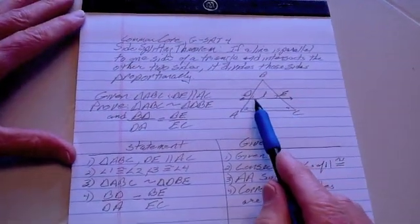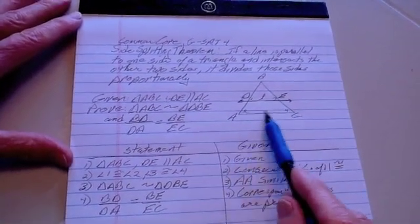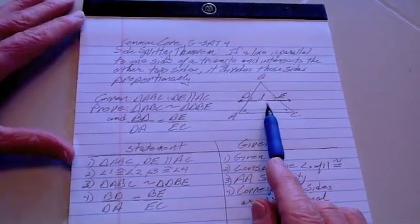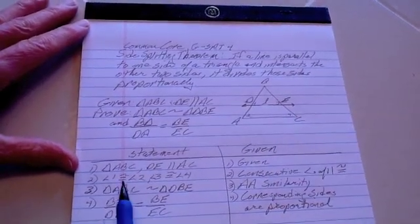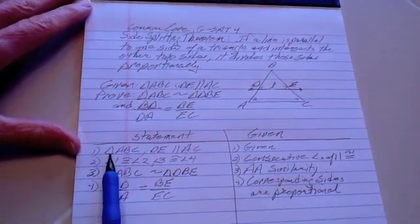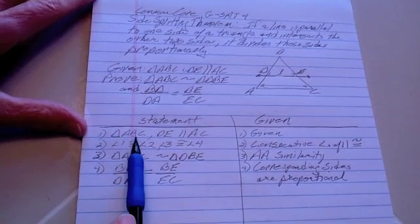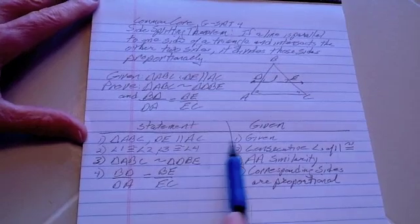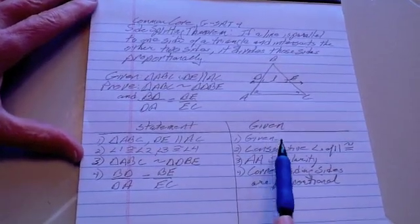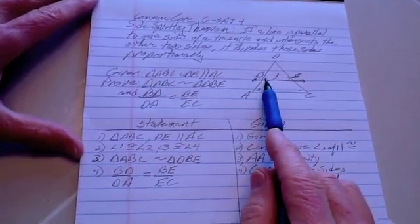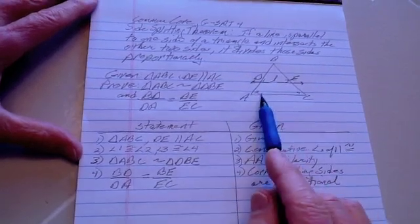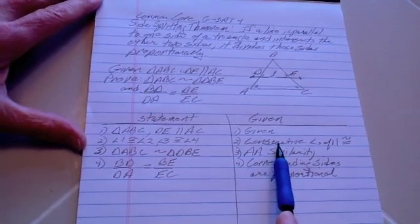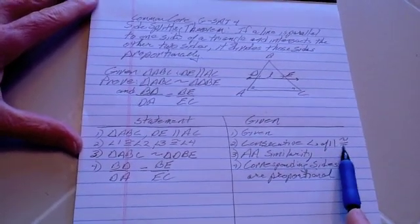So that's our game plan. That way we have an angle-angle, and then we can make sure that these two are similar triangles by the angle-angle theorem. So we go down here for the statement. The first one is we put down our given. Triangle ABC and DE being parallel to AC is given. Second step is that angle 1 is congruent to angle 2, and angle 3 is congruent to angle 4, and that's because corresponding angles of parallel lines are congruent.